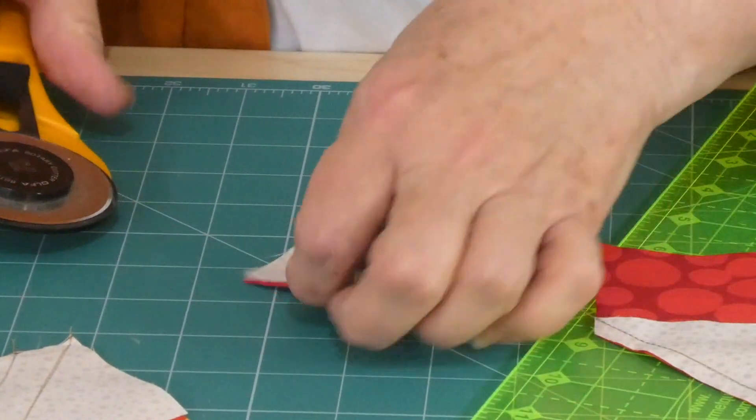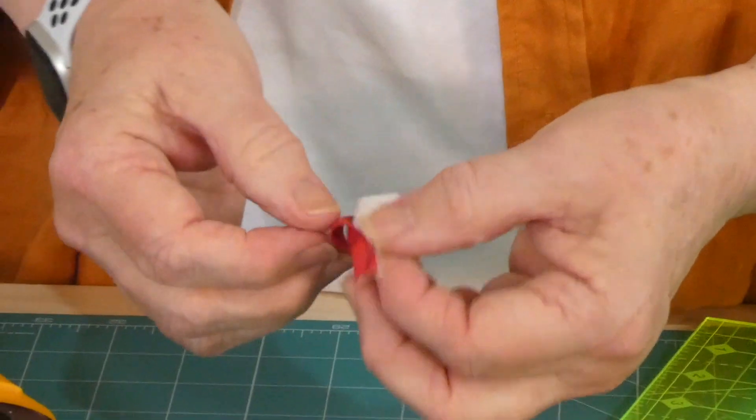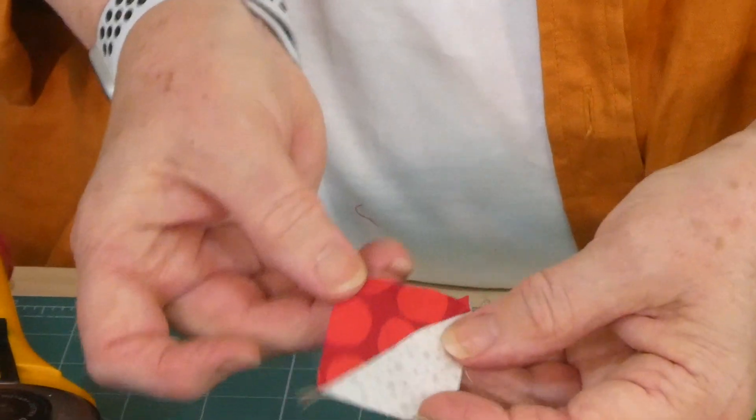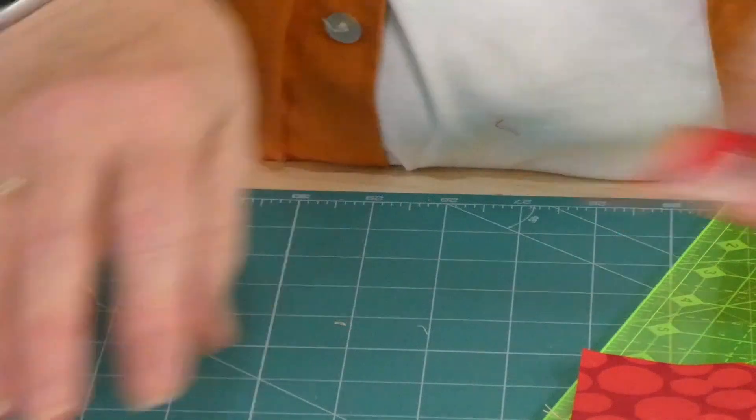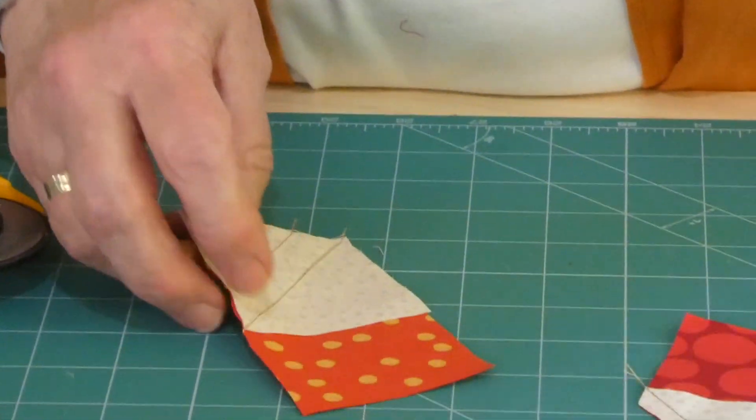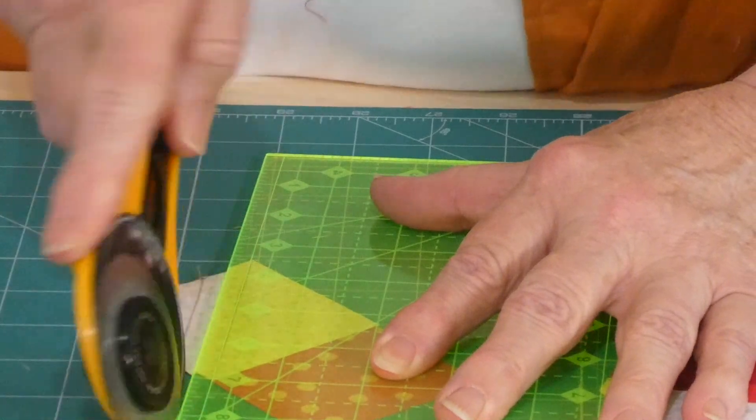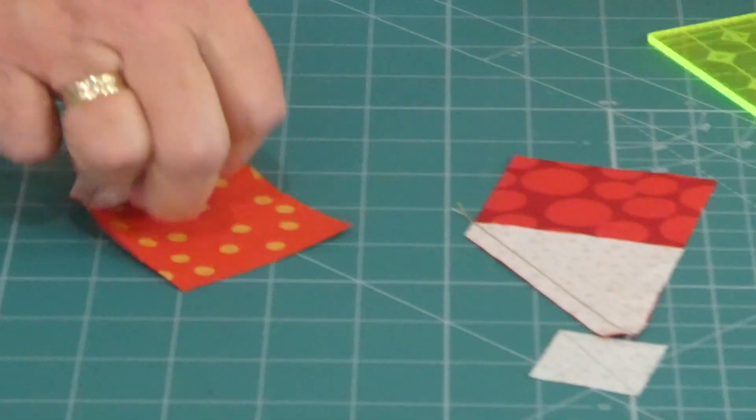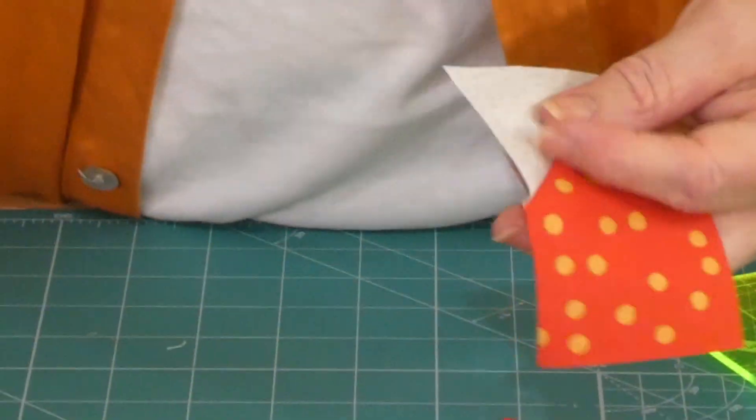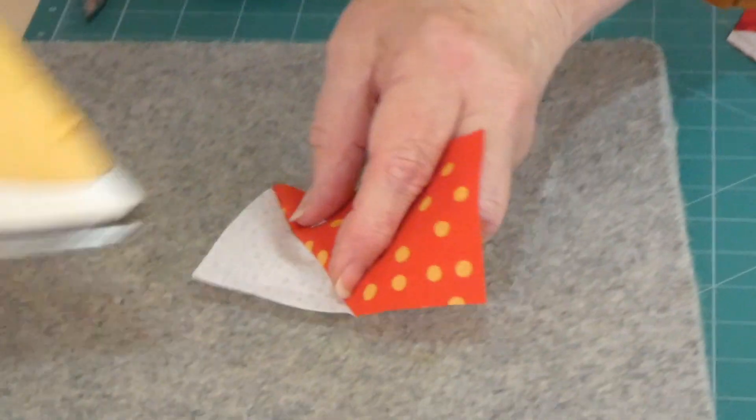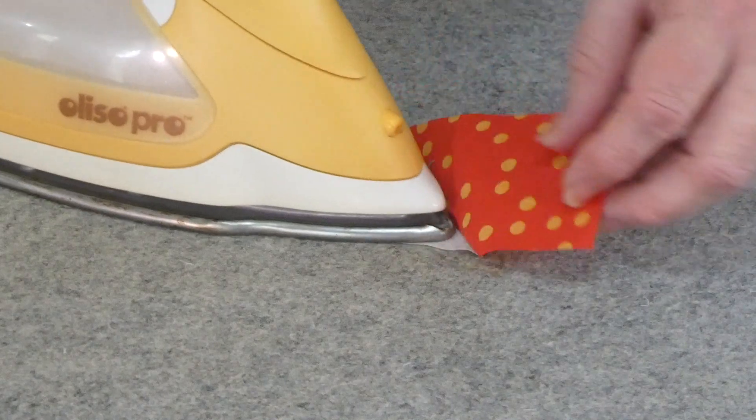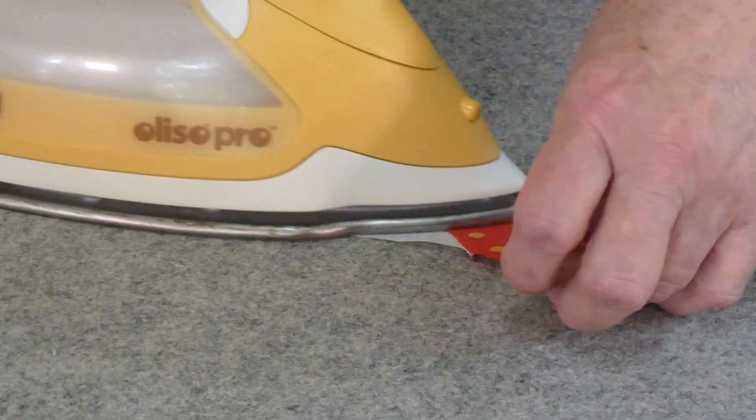So now I'm just going to cut between the two lines of sewing, so that I've got a quarter inch seam allowance. This piece here that we might not have perhaps used is now a very usable half square triangle unit. You could use it in a border, you could use it in some sashing, you could use it any way you like.